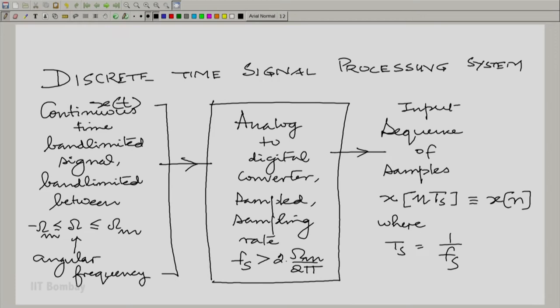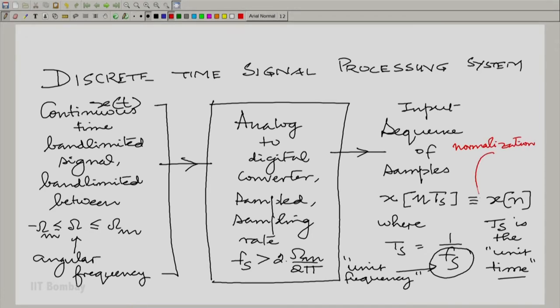Essentially we are saying t s is taken as the unit time, and that means f s now becomes the unit frequency. This process is called normalization. This process of calling this the unit time and this the unit frequency is normalization to go from continuous time to discrete time.